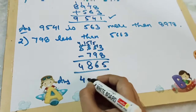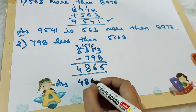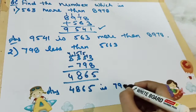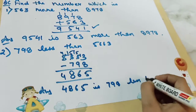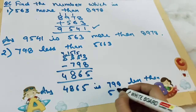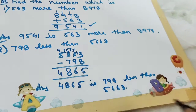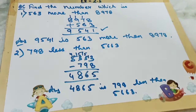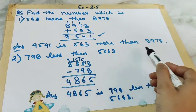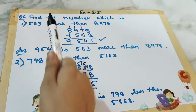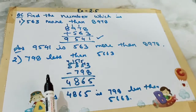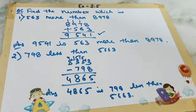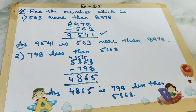4,865 is 798 less than 5,663. In this way, you have to solve and write the answer. More than means addition, less than means subtraction. Remember that. Do the questions accordingly.